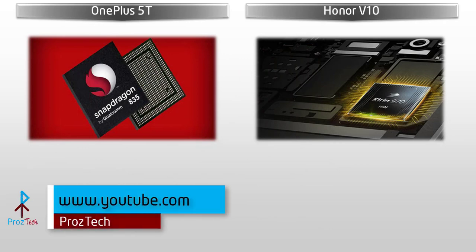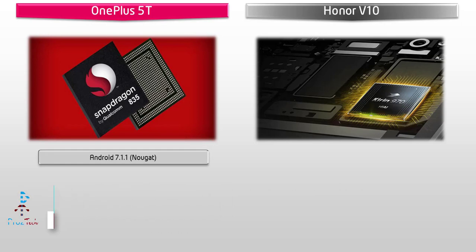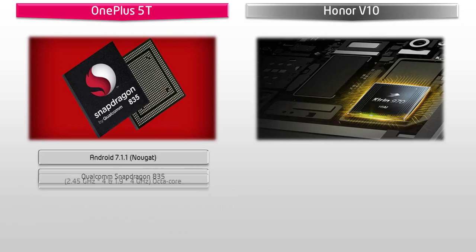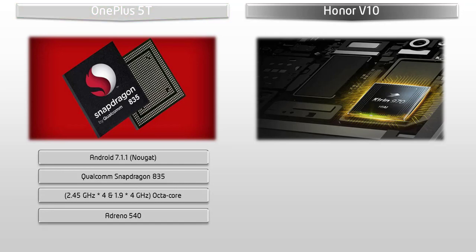Starting with the OnePlus 5T device, it works on Android 7.1.1 Nougat Oxygen OS and is powered by a 2.45 GHz octa-core with Qualcomm Snapdragon 835 and Adreno 540 GPU. Furthermore, OnePlus says that Oxygen OS is their operating system built on Android — it's smooth, it's minimalistic, it's refined.